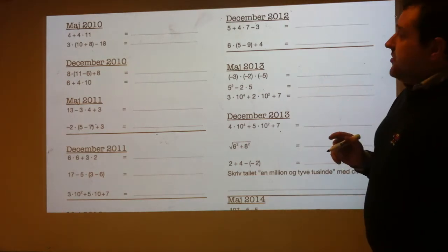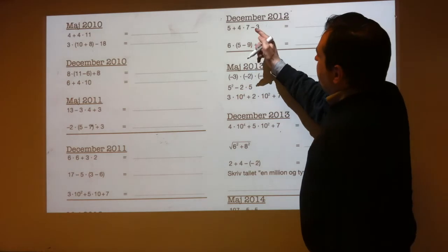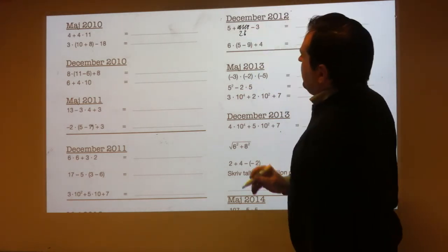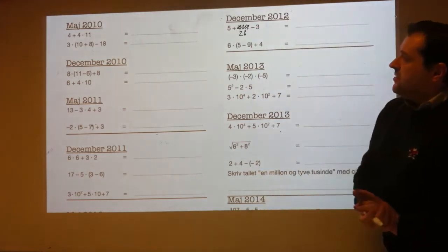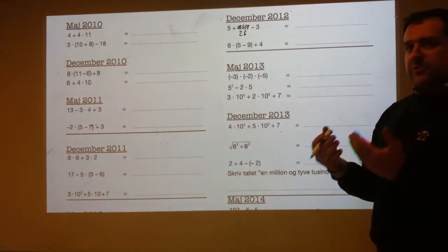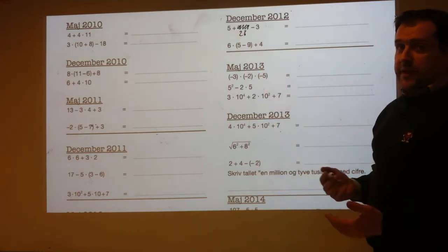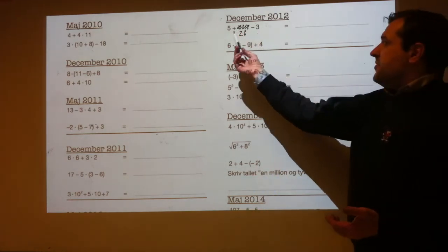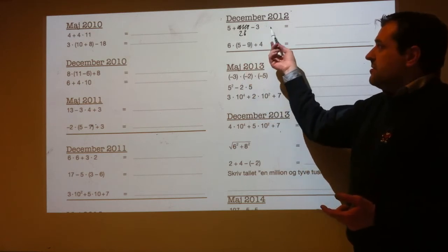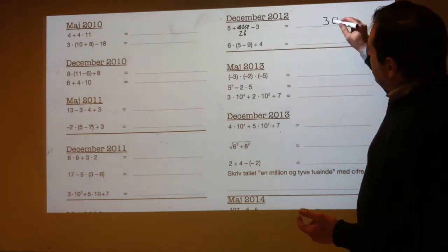December 2012. 5 plus 4 times 7 minus 3. We've got to do the 4 times 7 first: that's 28. So that's 5 plus 28 minus 3. Do the plus and minus in order from left to right: 5 plus 28 is 33, then minus 3 makes 30.